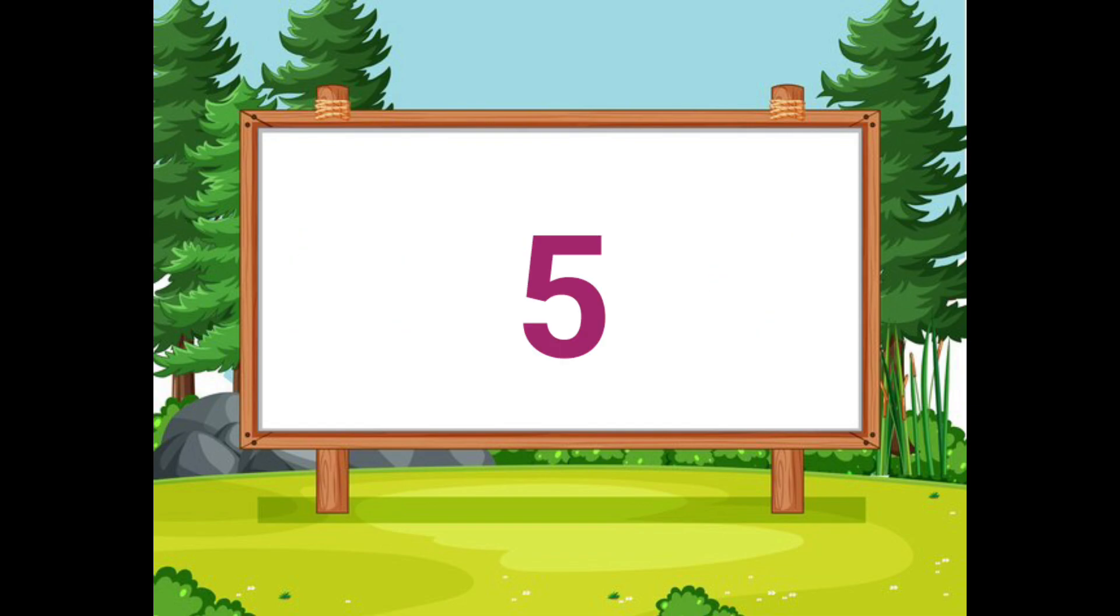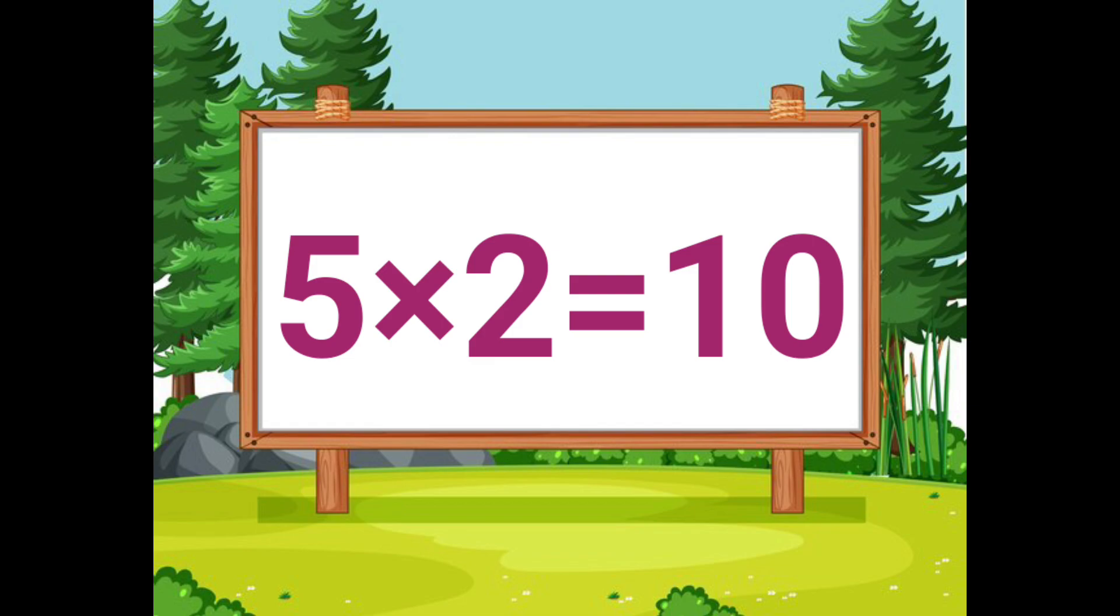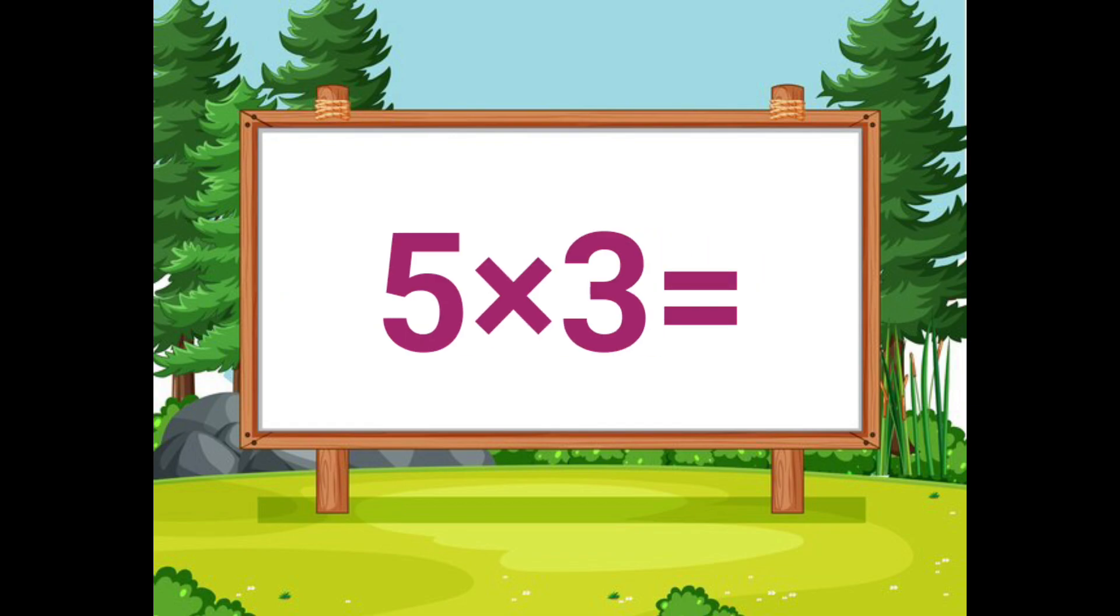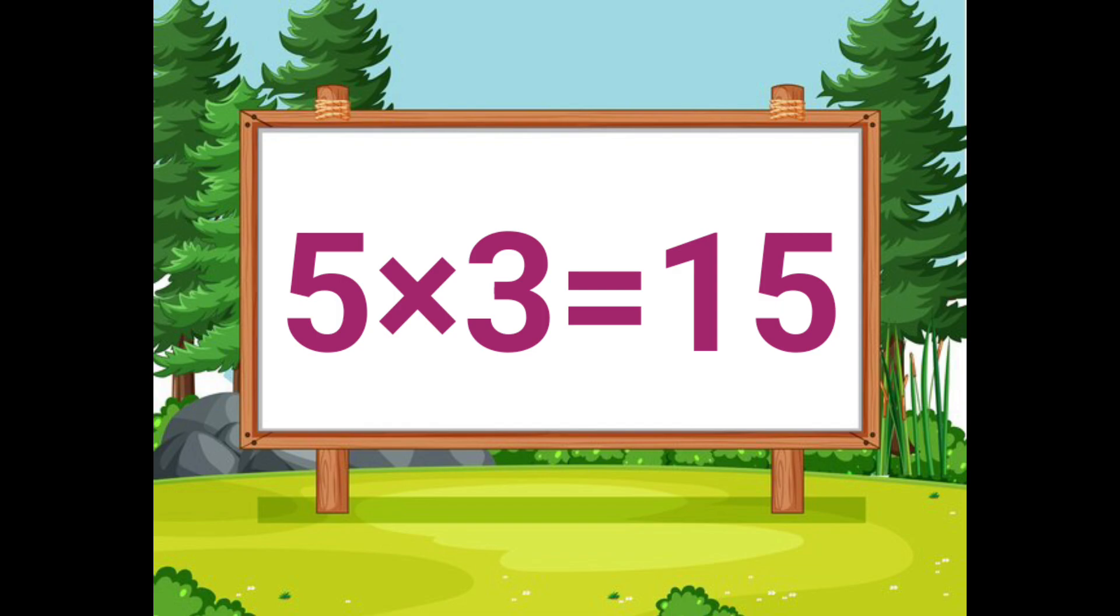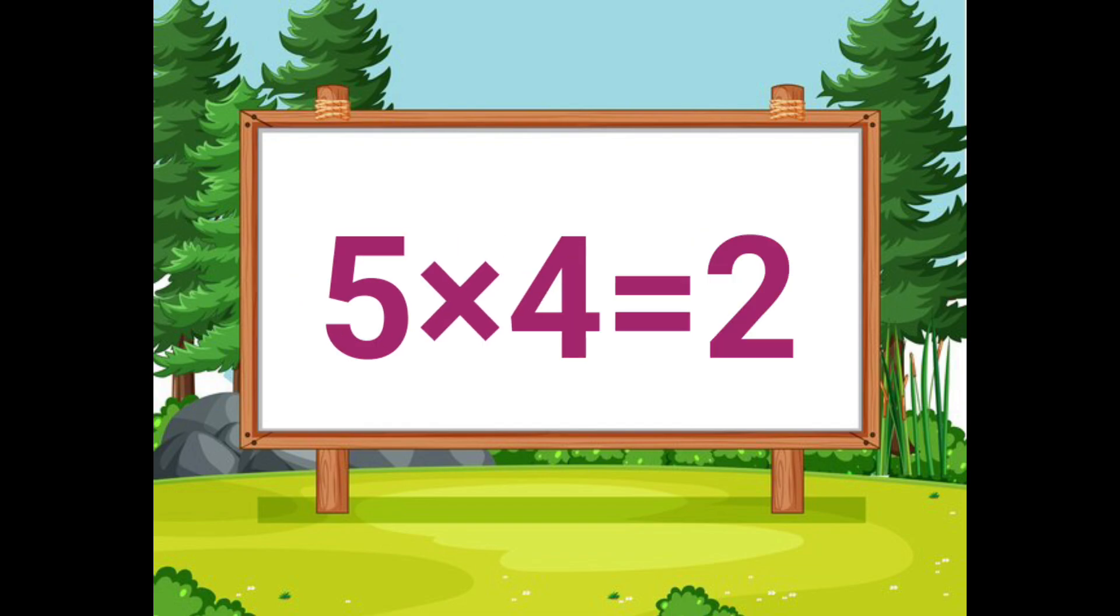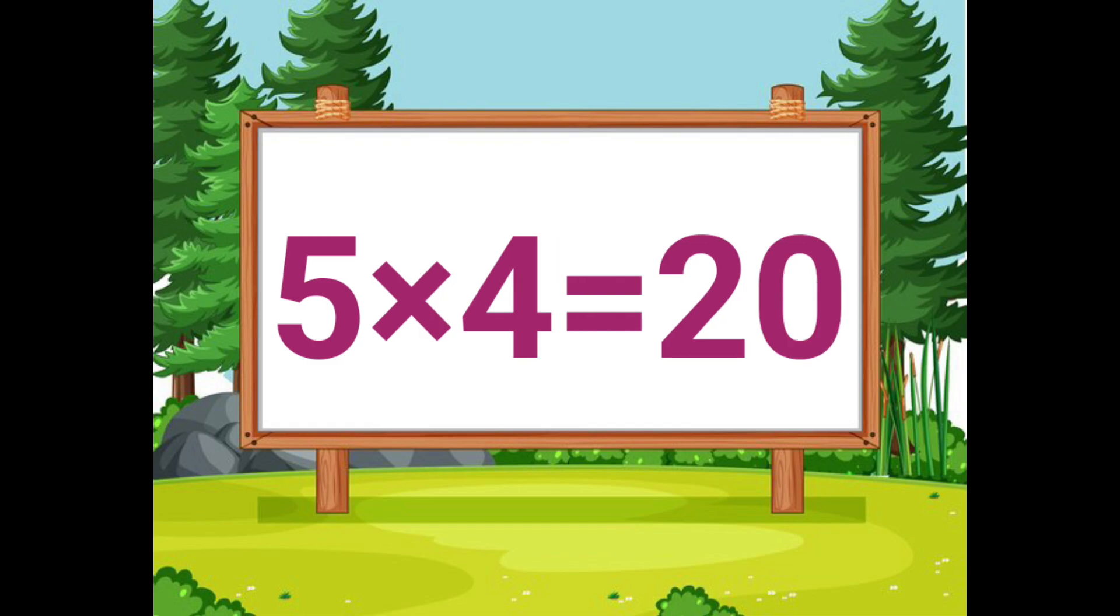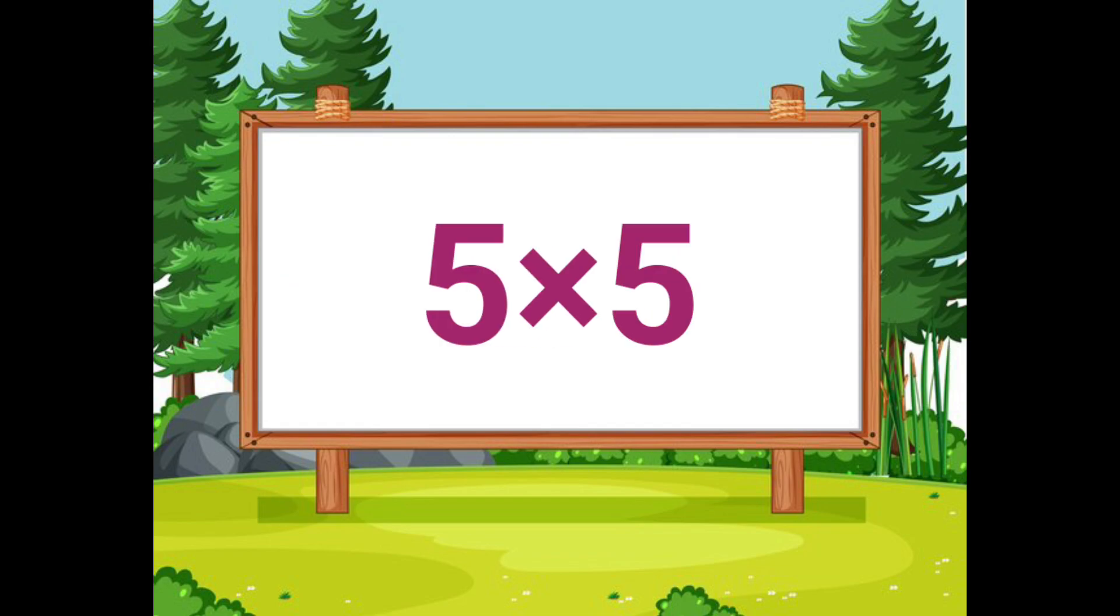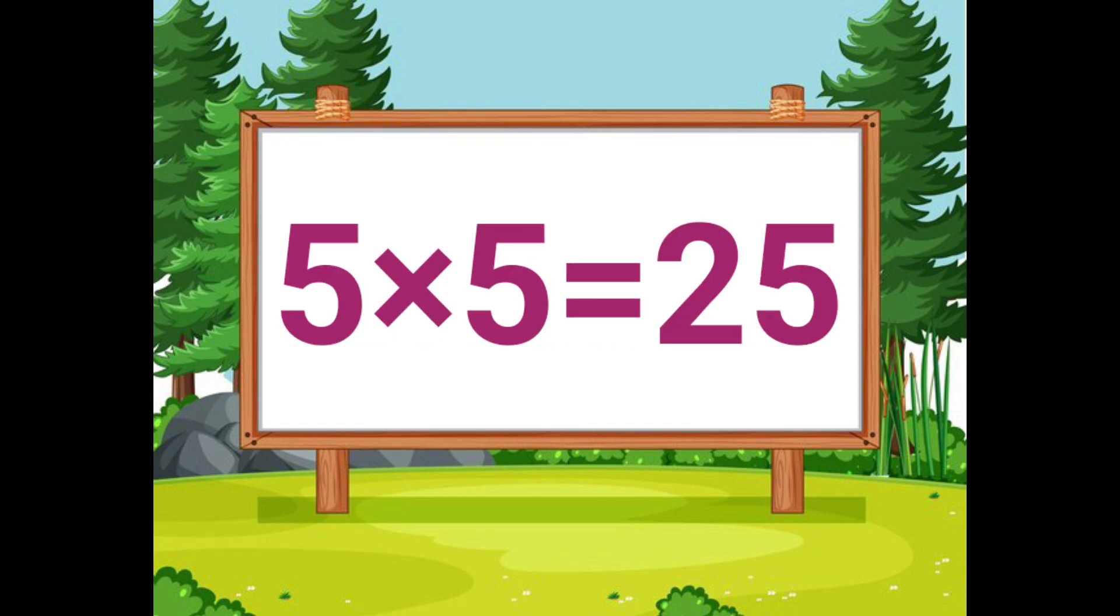Five twos are ten. Five threes are fifteen. Five fours are twenty. Five fives are twenty-five. Five sixes are thirty.